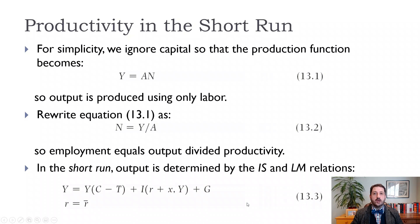Looking in the short run: technological growth is kind of a long run issue, but in the short run we can think of capital as fixed. So output is equal to our productivity A times the labor force N. We can rewrite that as N is equal to output divided by productivity.